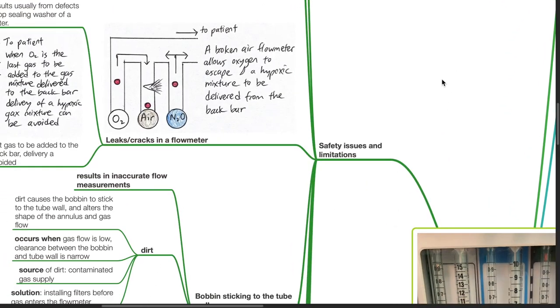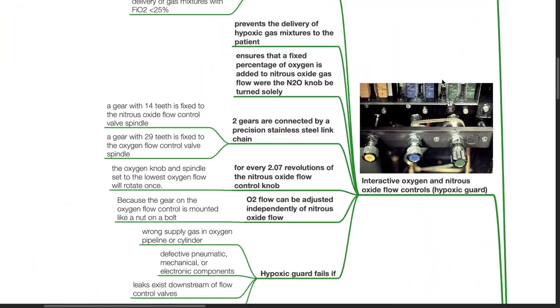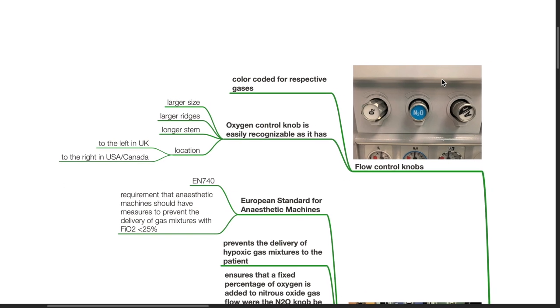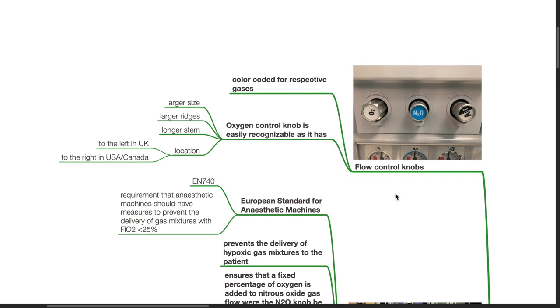Safety issues and limitations: Flow control knobs are color coded for respective gases. The oxygen control knob is easily recognizable as it has a larger size, larger ridges, longer stem, and it is located to the left in UK and to the right in USA and Canada.